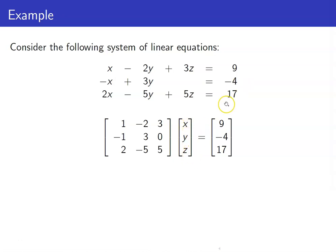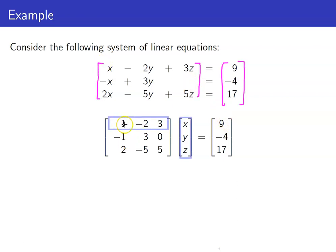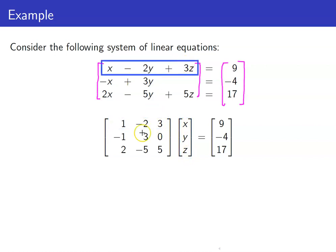Take note that if you take your coefficient matrix and form a column matrix consisting of your variables x, y, z, and then turn the constants into another column matrix, when you multiply these two and equate with the constants, you will get the original system. For example, this gives x minus 2y plus 3z, and so on. This product is equal to the right-hand side; two matrices are equal when their corresponding entries are equal.